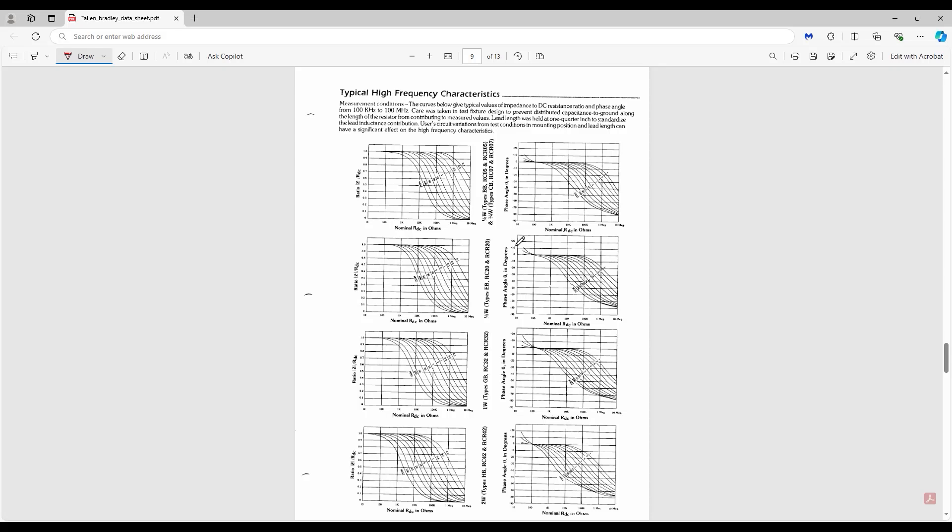Zooming out a bit to look at the full page, we see plots for resistor sizes from an eighth watt up to two watts. The key takeaway here is, as the resistor physical size increases, so does its parasitic capacitive reactance at any given frequency. So there's something about the physical size of the resistor that drives that phenomenon.